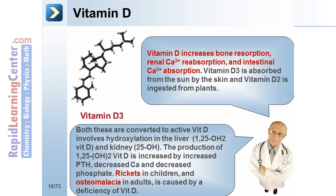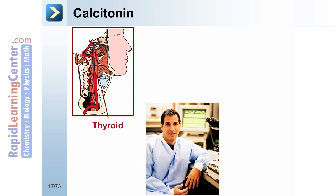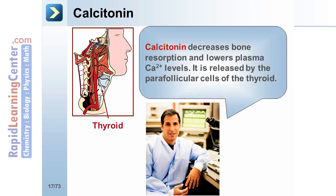Rickets in children and osteomalacia in adults are caused by a deficiency of vitamin D. Calcitonin decreases bone resorption and lowers plasma calcium levels. It is released by the parafollicular cells of the thyroid.